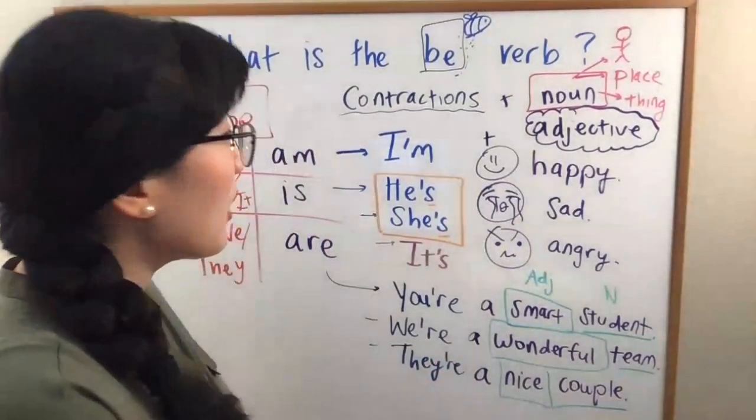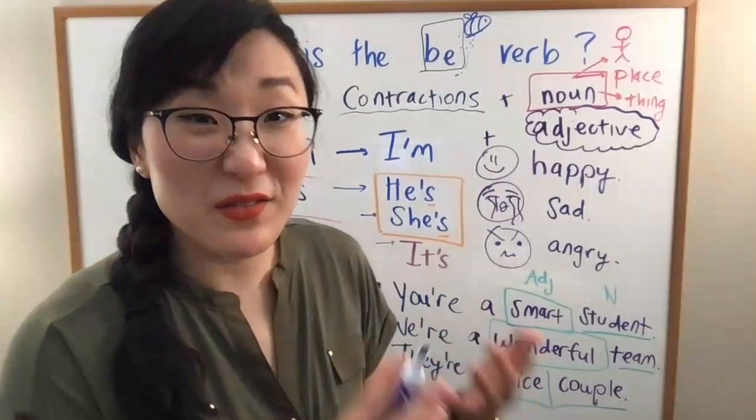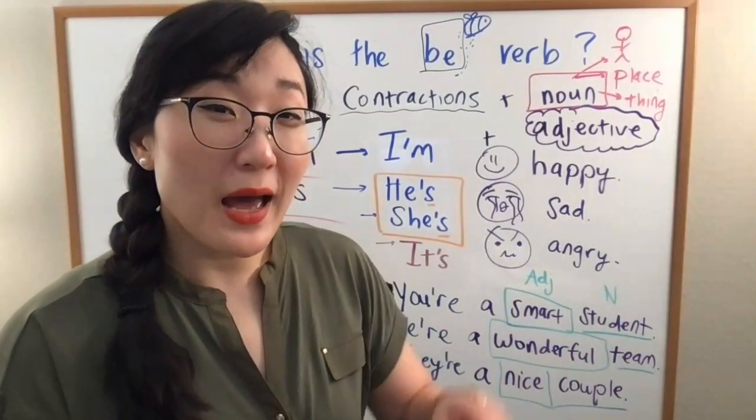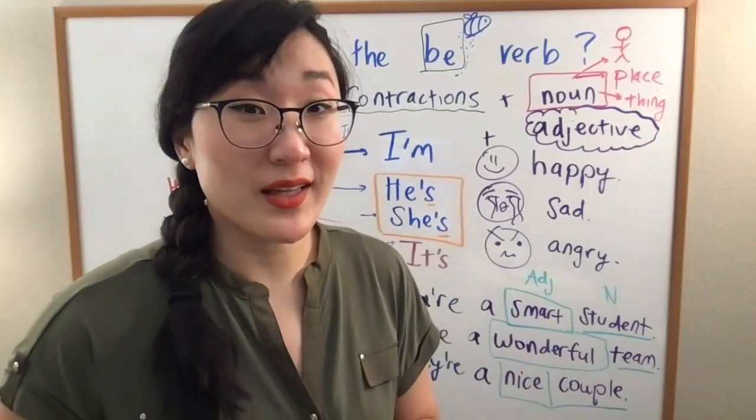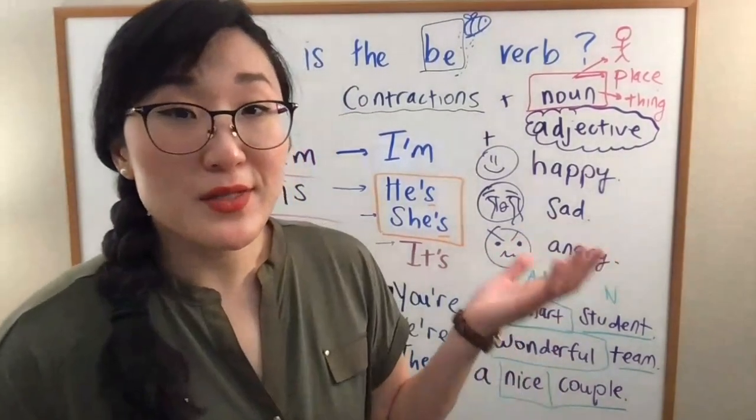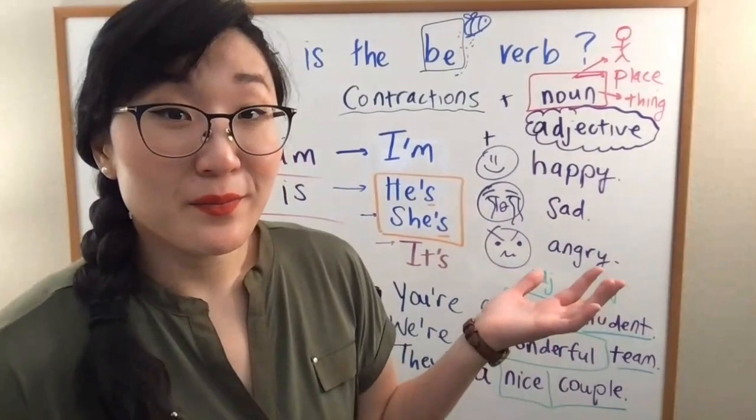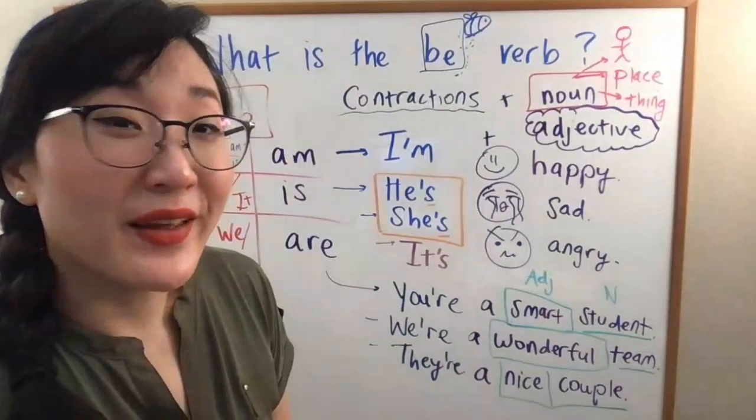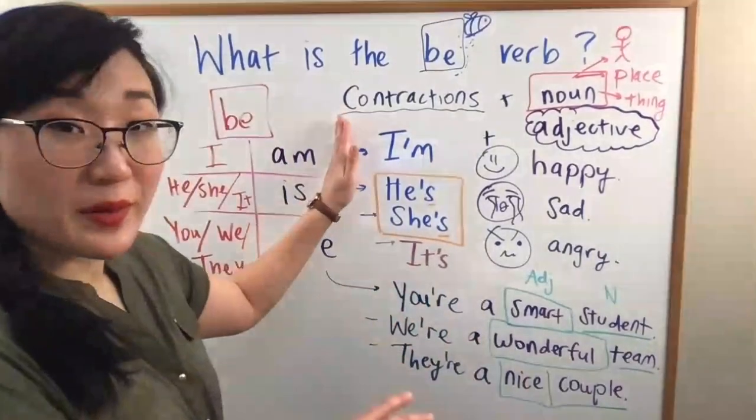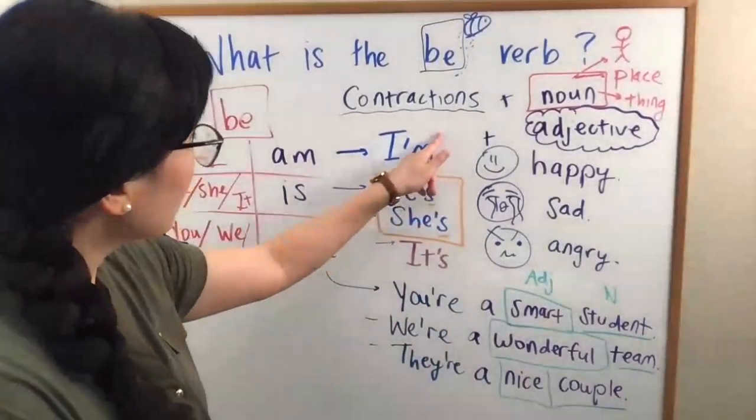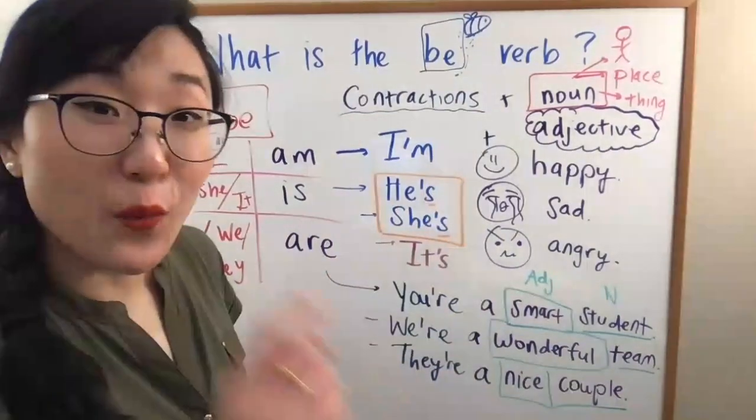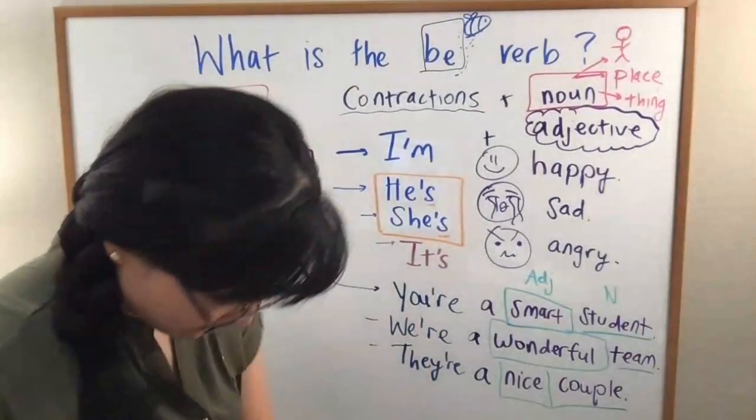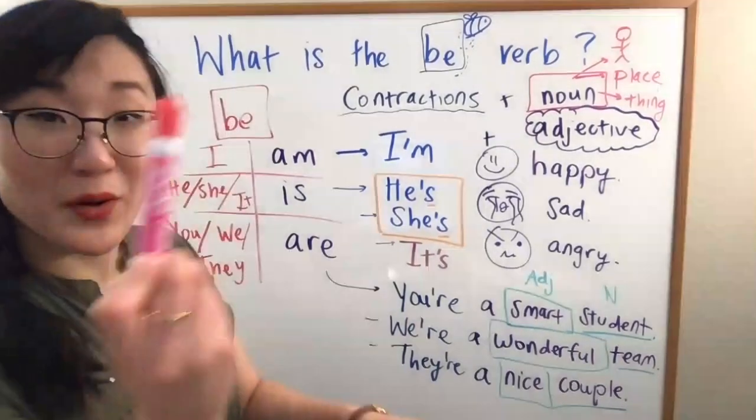I hope this video helps explain some of the basics of how to use the BE verb. But I want to show you one more thing. How do we use these as negatives? Well, very simple. After the verb, after this BE verb, you want to just use one word, not. If I can find my marker, here we go.